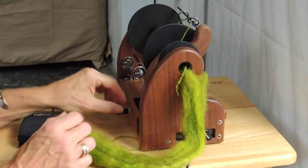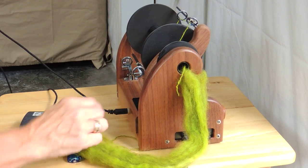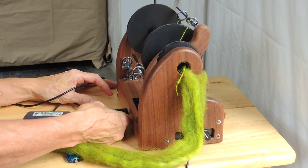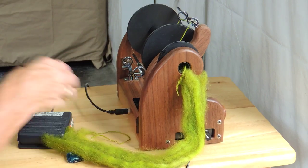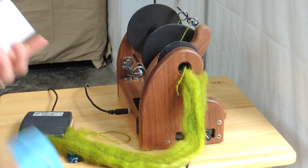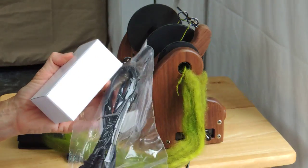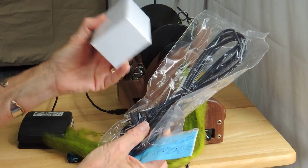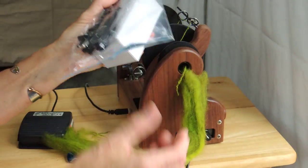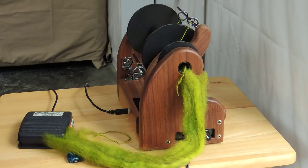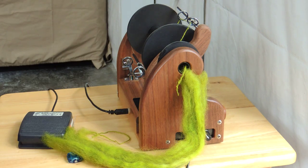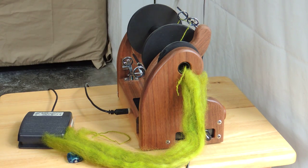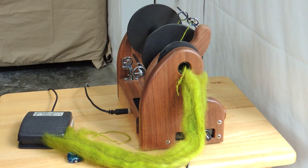So this cord that we're seeing here is the power cord. When you get your mini spinner that power cord comes in two pieces just like you would have for your computer and they attach, gives you quite a lot of cord, eight or so feet I guess.